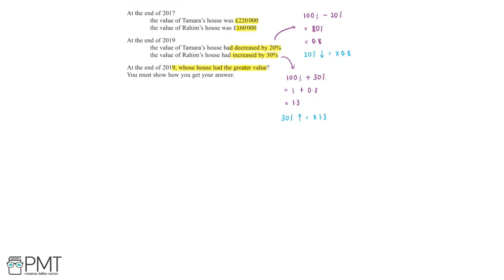Now we can find out the value of both of their houses at the end of 2019. We'll start with Tamara's house. We know that her house was worth £220,000 at the end of 2017. By 2019, this had decreased by 20%. So to find the value in 2019, we'd do £220,000 multiplied by 0.8, which is equal to £176,000.